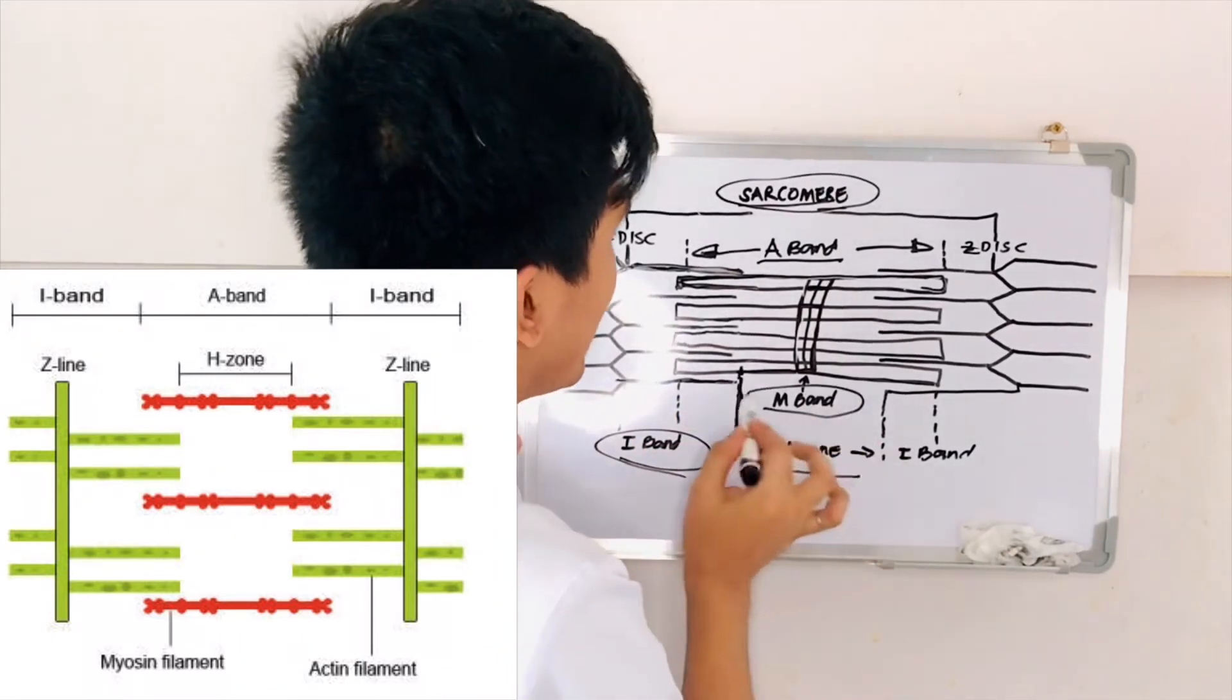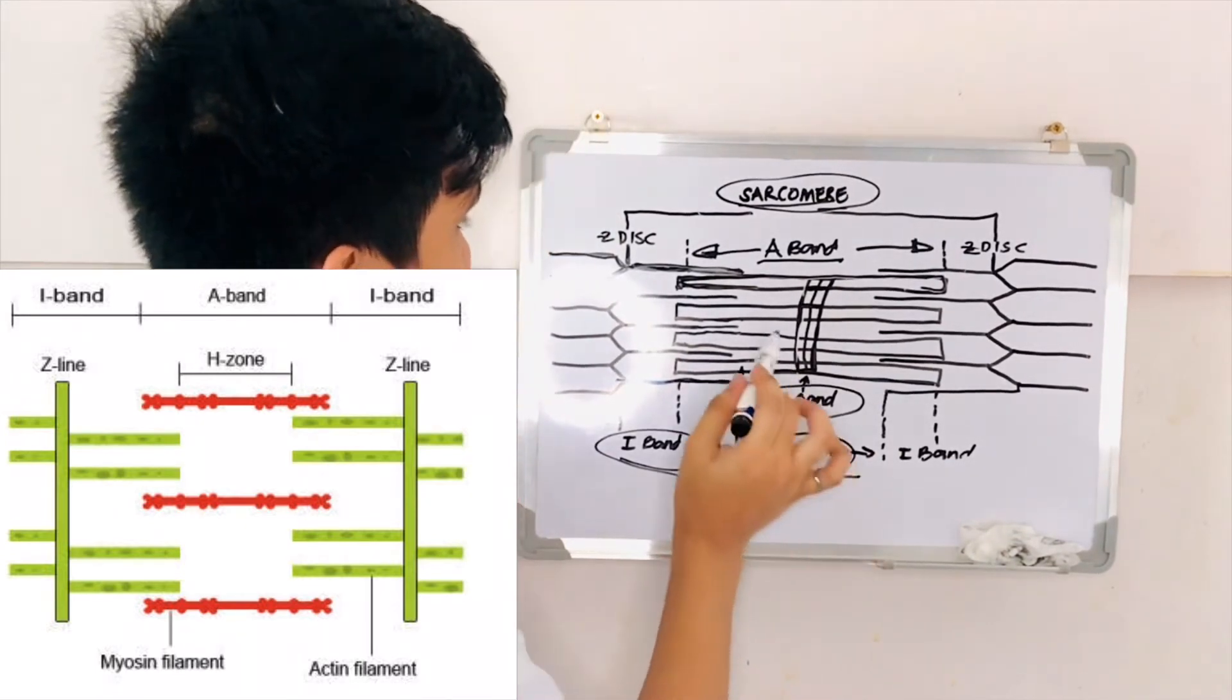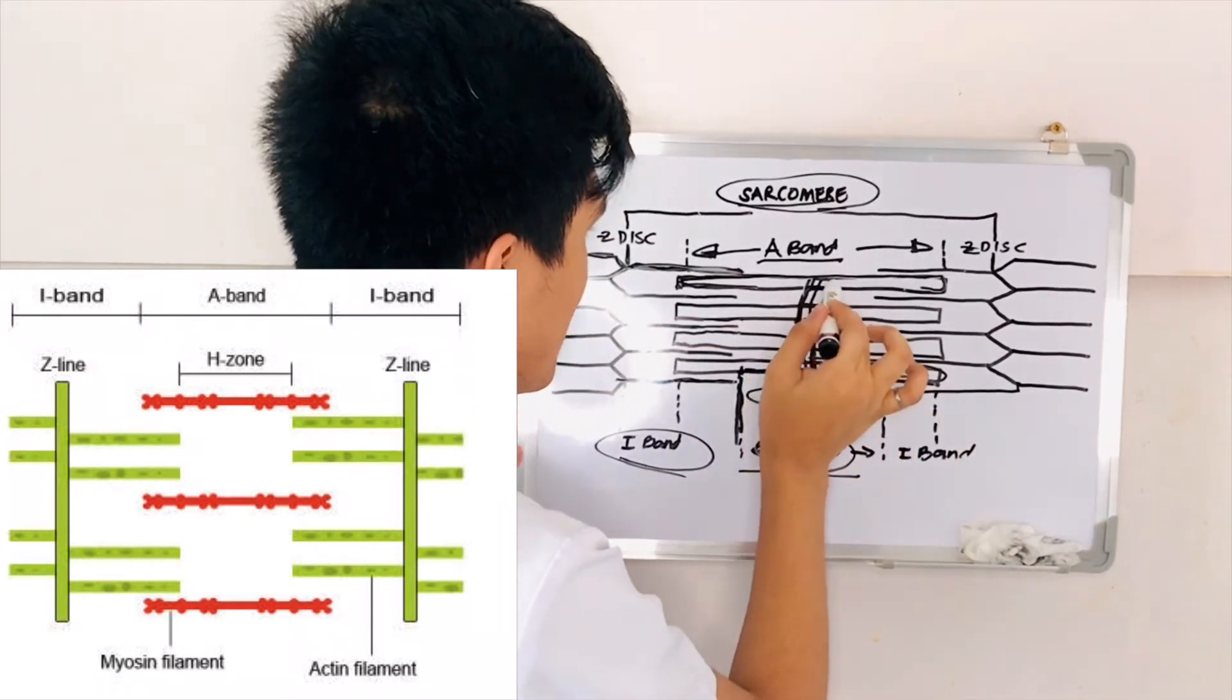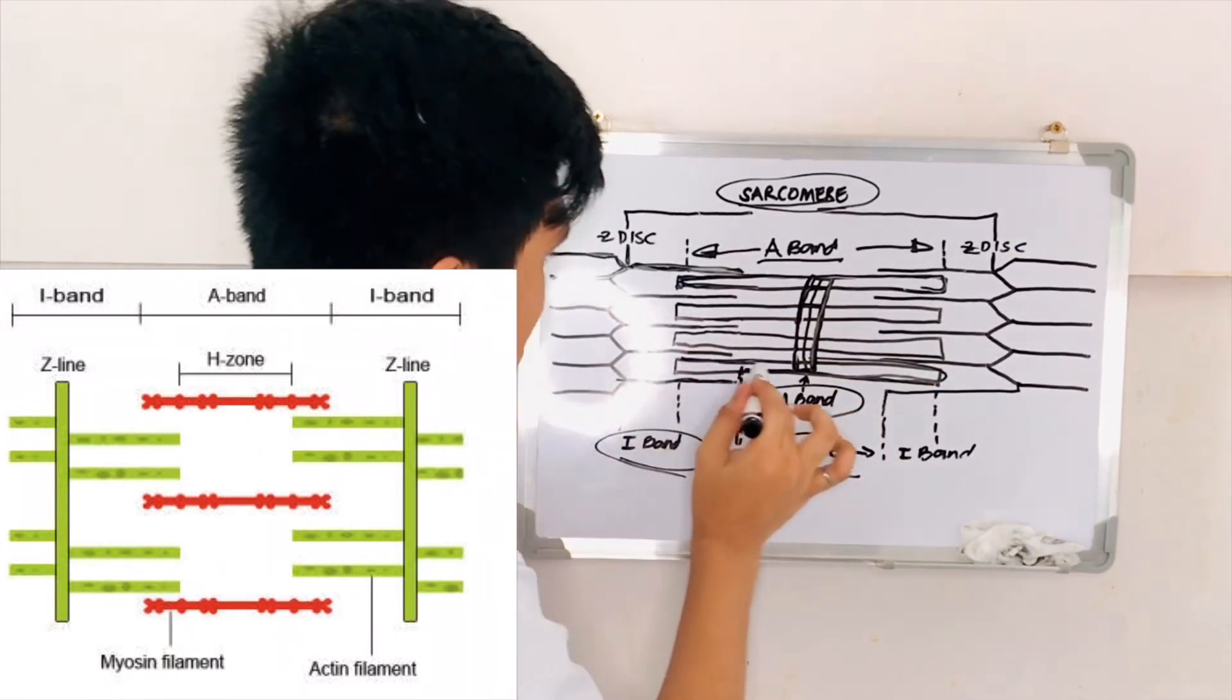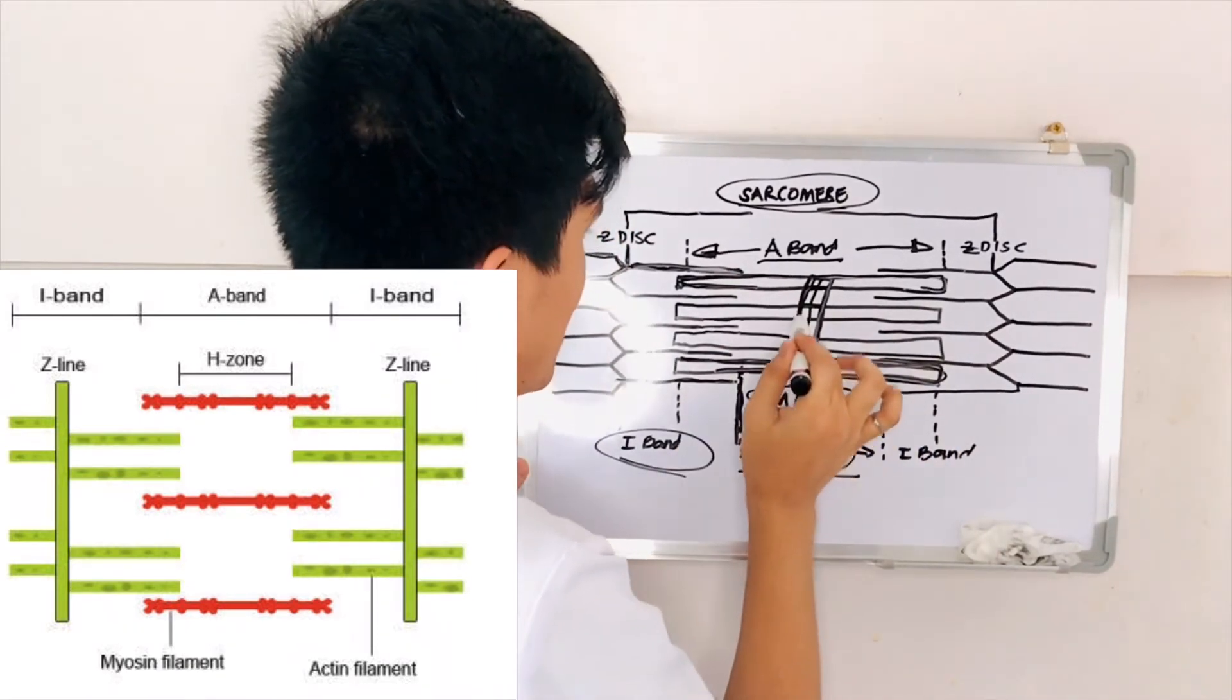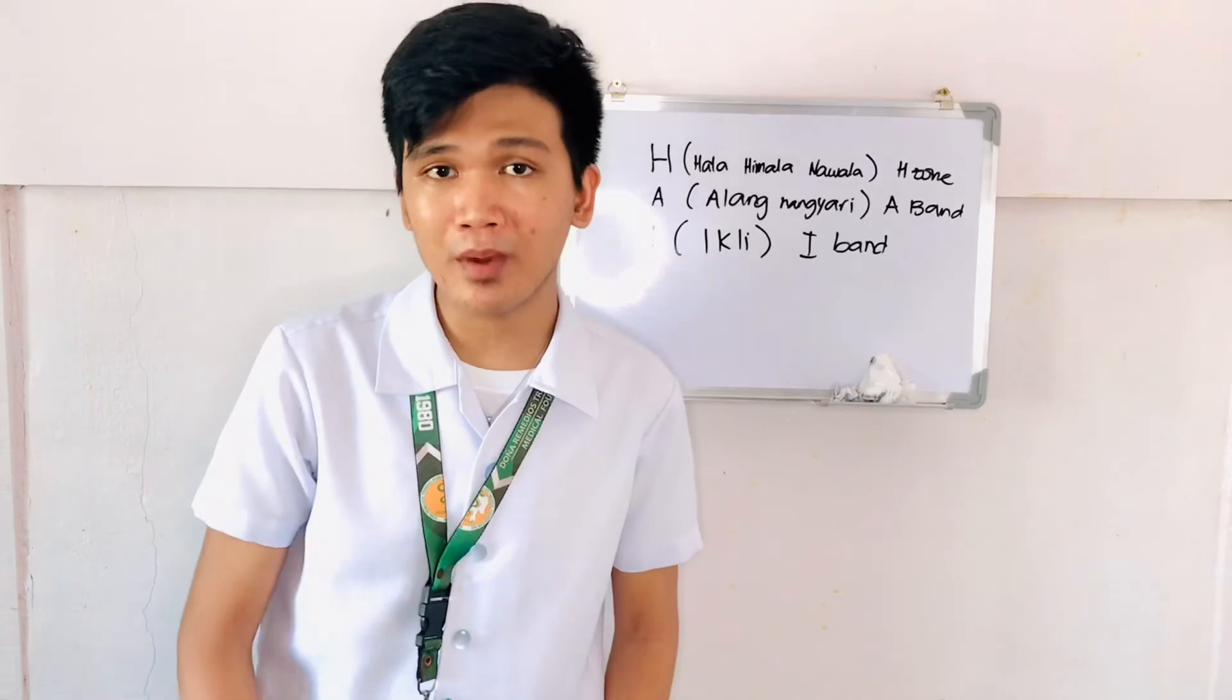While when we say M-band, M-band is the central portion of the H-zone that connects the myosin together. This one is the M-band and therefore, M-band is the wide portion of the myosin. The wide middle portion of the myosin because this one here is the M-band in a vertical position. Of course, to make this easier for you to remember.